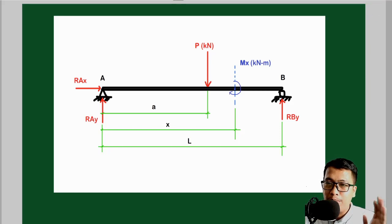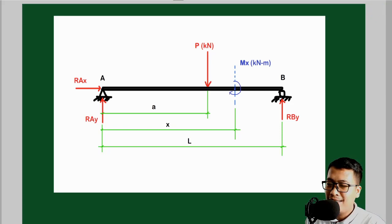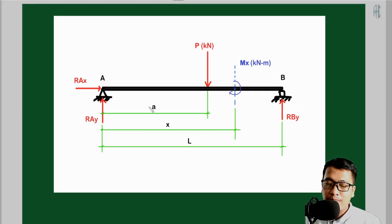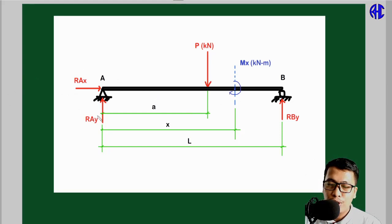Before we start, shout out to our fellow engineers Alfredo Moratalia Jr., aka Engineer Ali, and his friend Mark Douglas Batacan. Shout out to all fellow engineers and engineering students out there. Let's start. As you can see in the figure, we have a simply supported beam — simply supported means we have a hinge and a roller support.